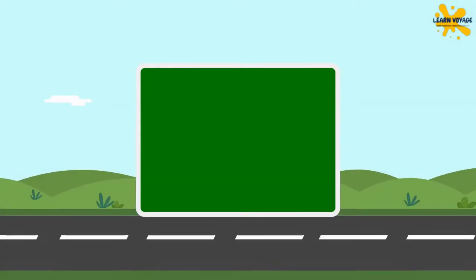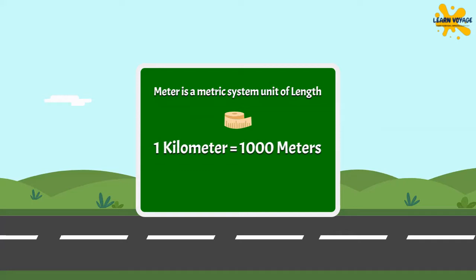Did you know? The meter is the base unit of length in the international system of units. A kilometer is a unit of length equaling 1000 meters. So you need to multiply the value in kilometers by 1000 to get the value in meters.